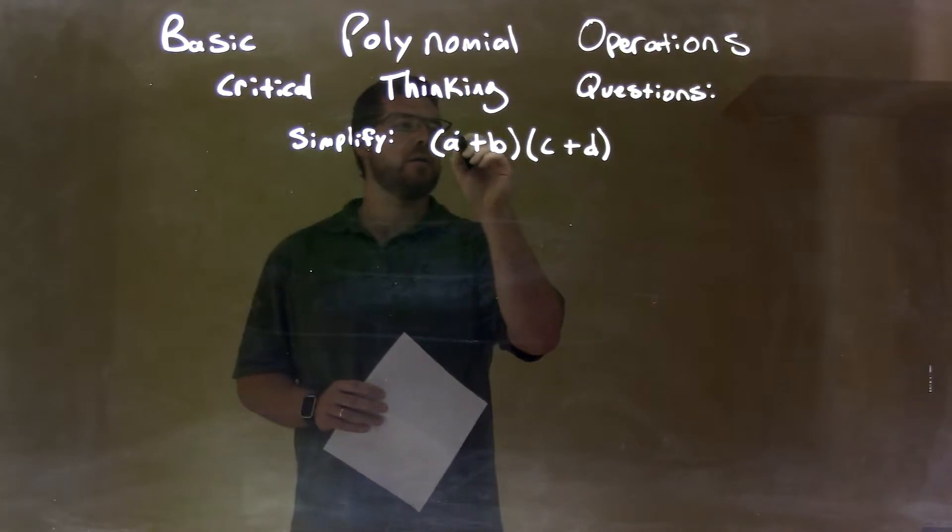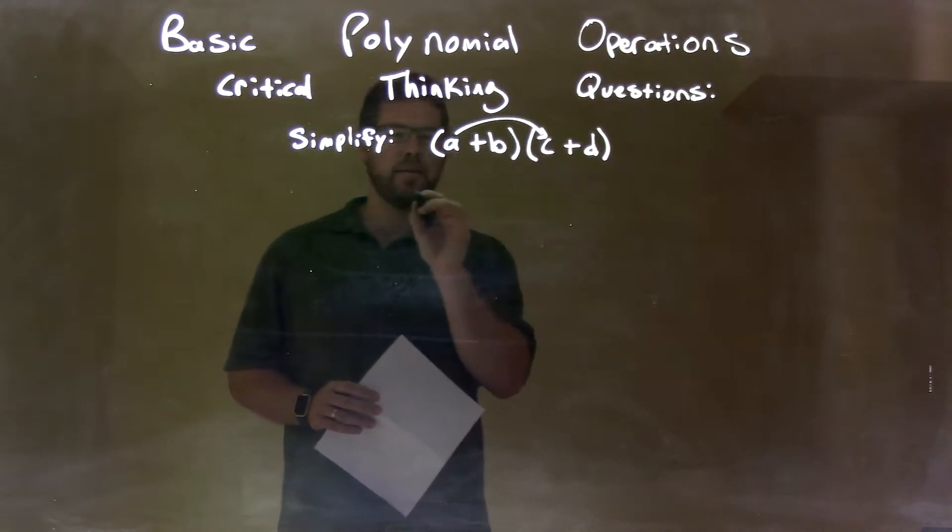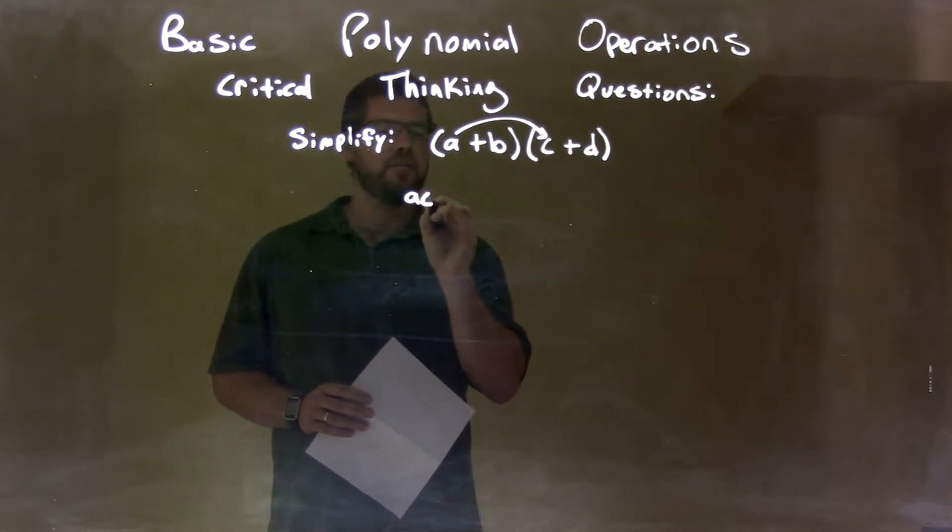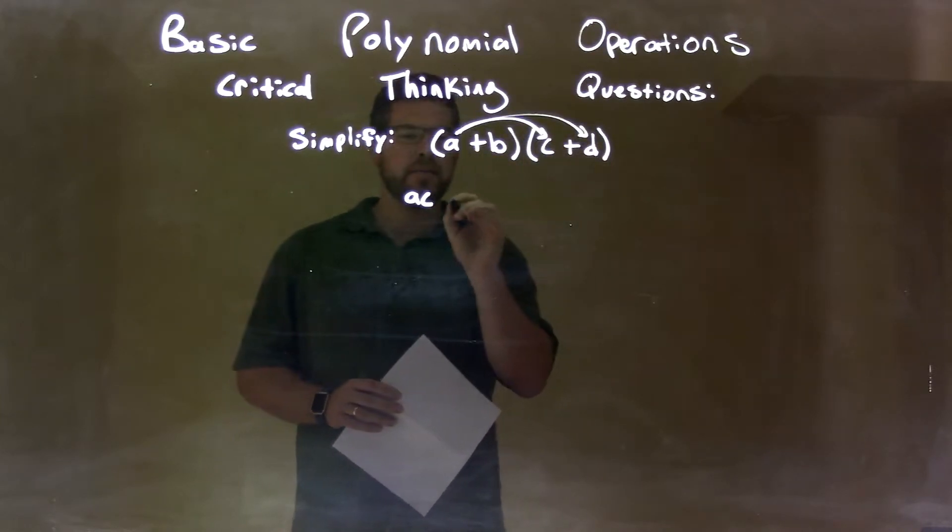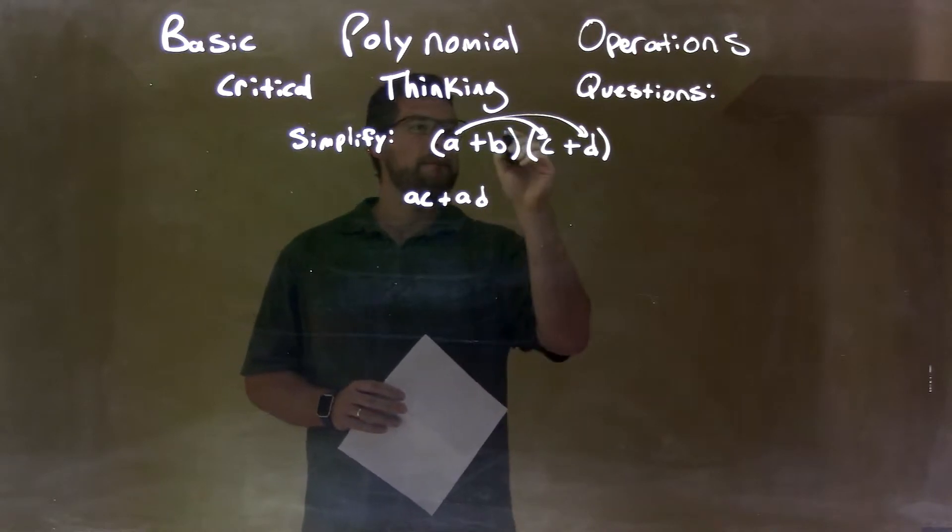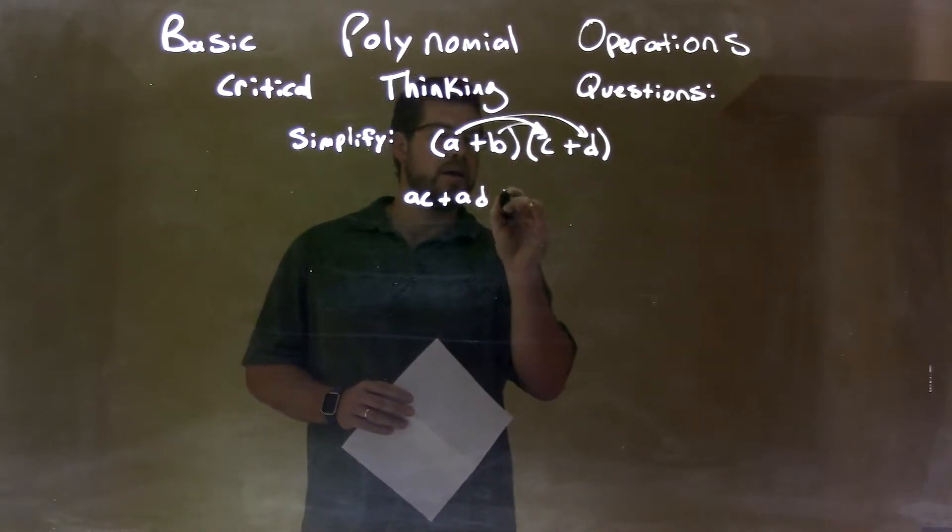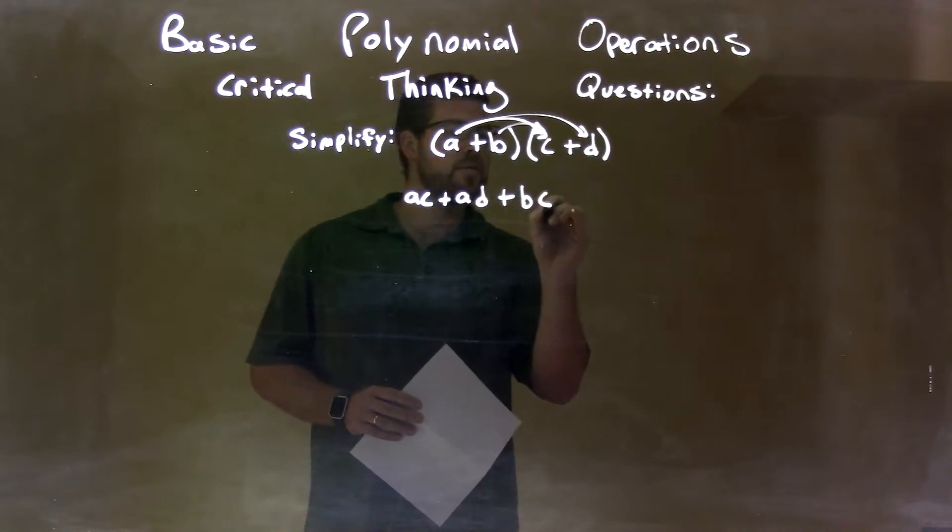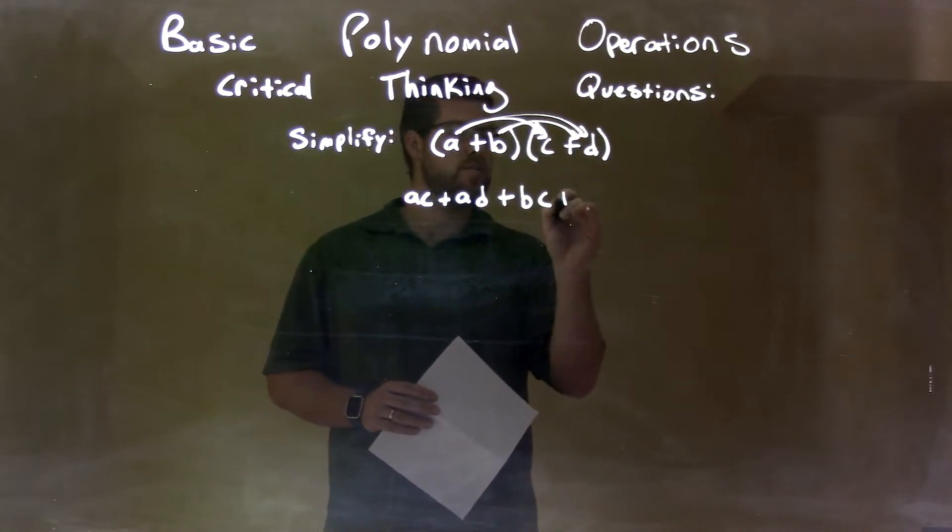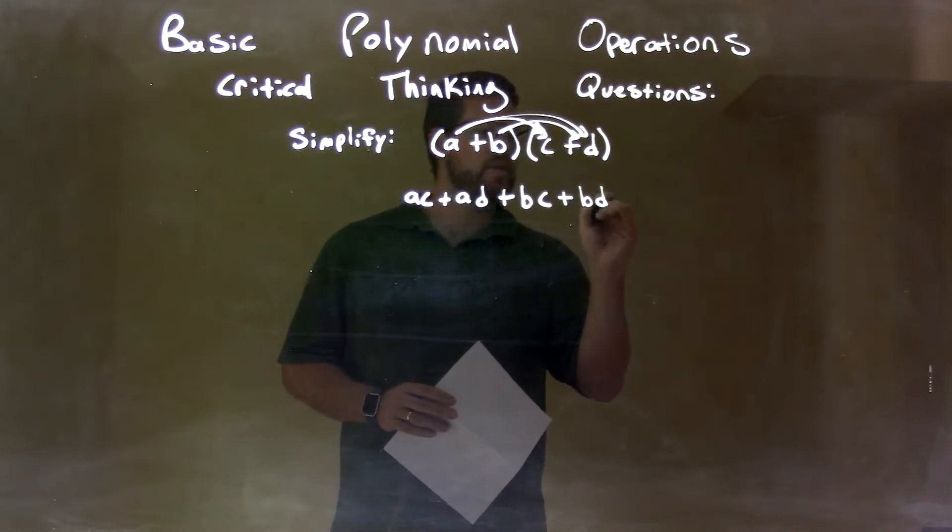So, a times c is just ac, then a times d is ad, then b times c is just bc, and b times d is just bd.